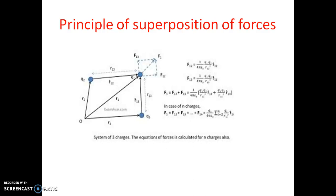The force acting on Q1 due to Q3 is F13 = 1/(4πε₀) × Q1Q3/R13² × unit vector R̂13. The total force on Q1 is F1 = F12 + F13. Taking 1/(4πε₀) as common, we get F1 = (1/4πε₀) × [Q1Q2/R12² × R̂12 + Q1Q3/R13² × R̂13]. This is the case for three charges, and the same approach is applicable for any number of charges.